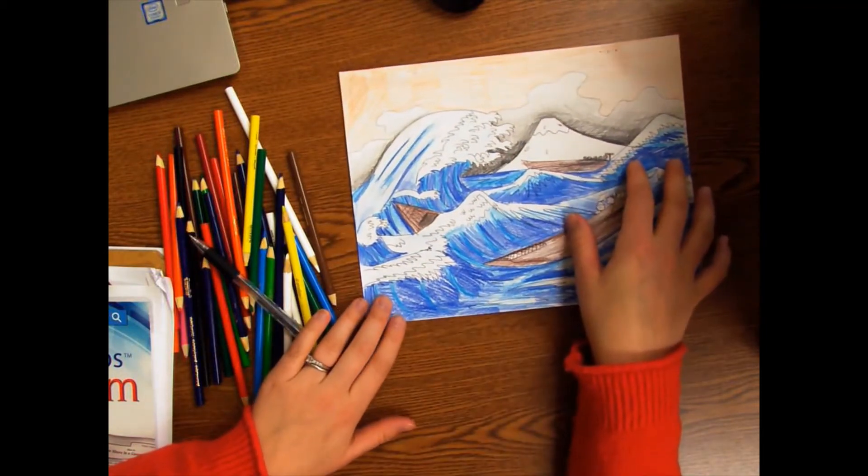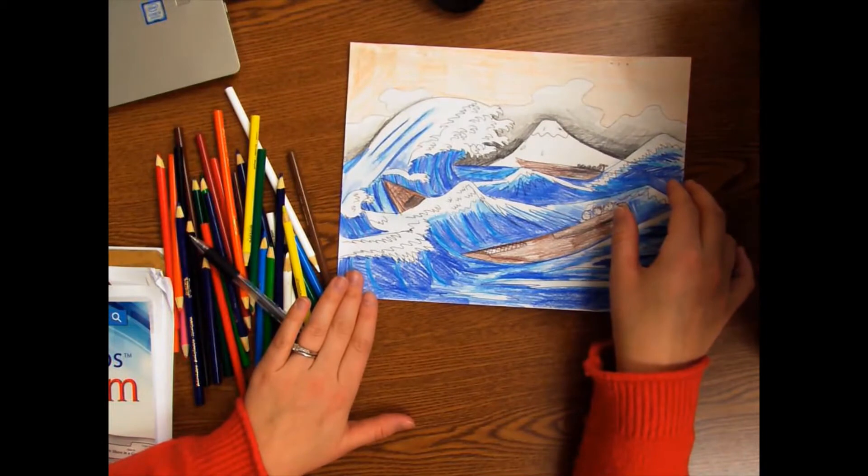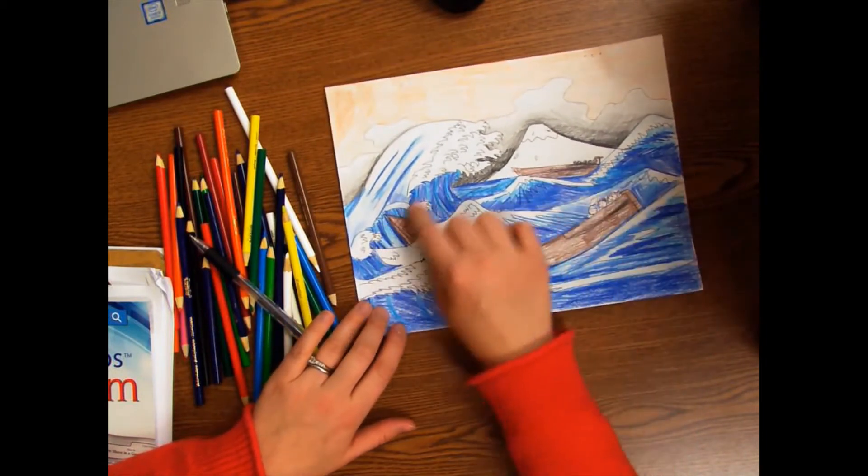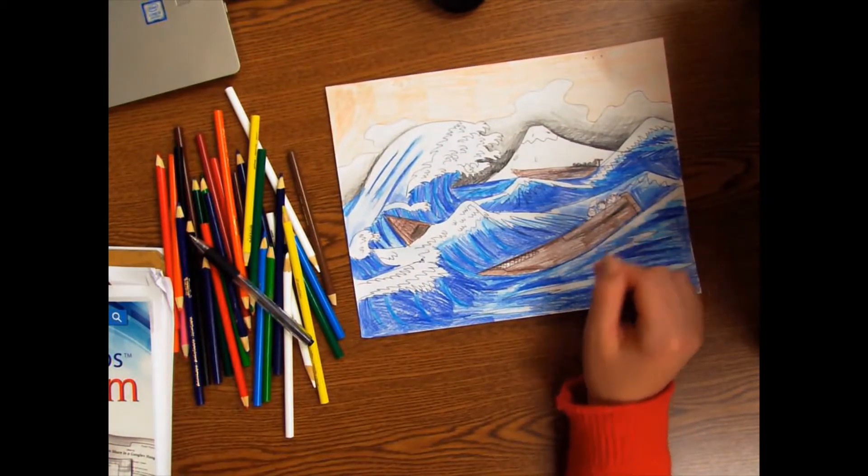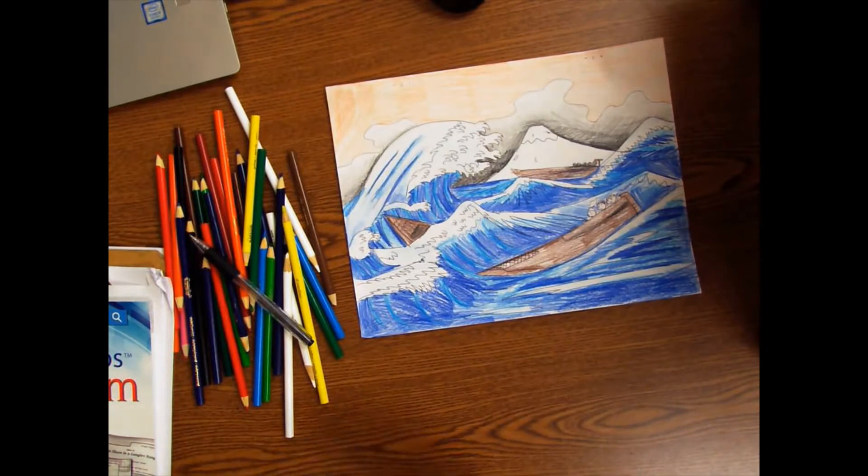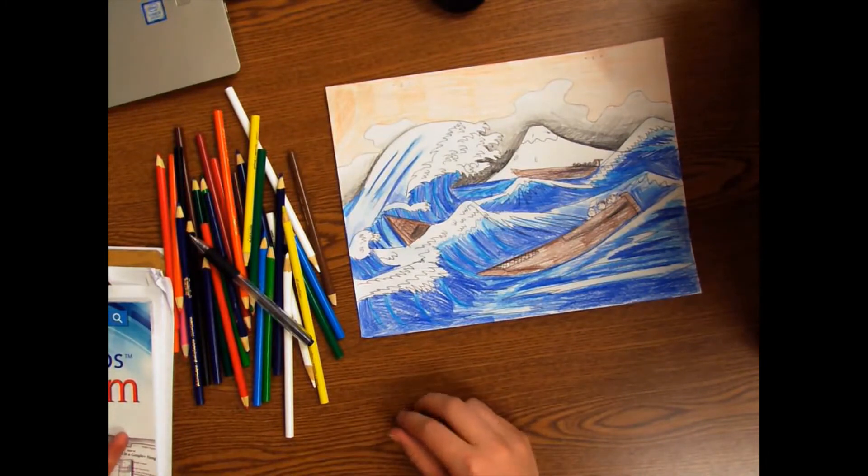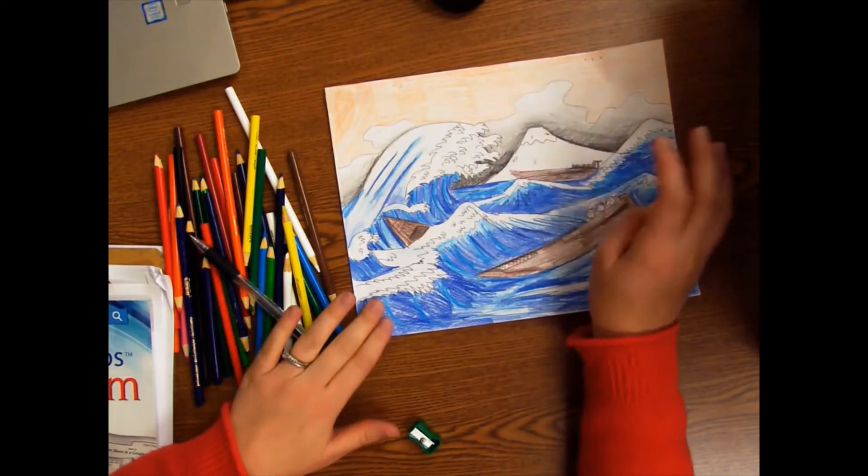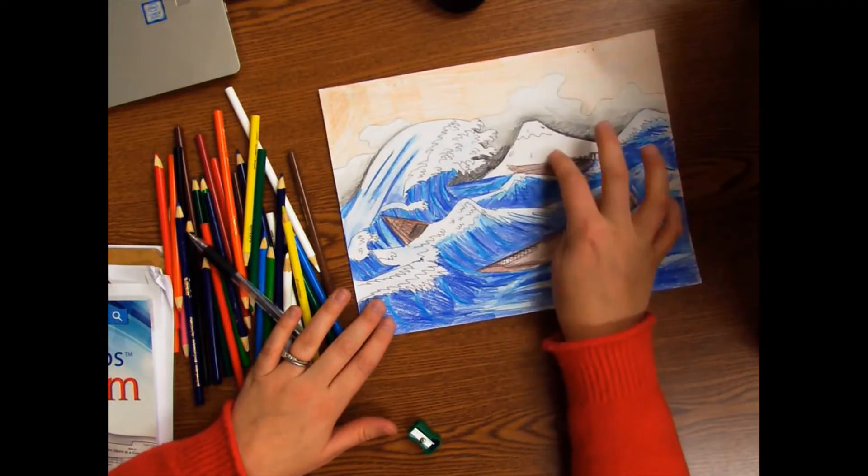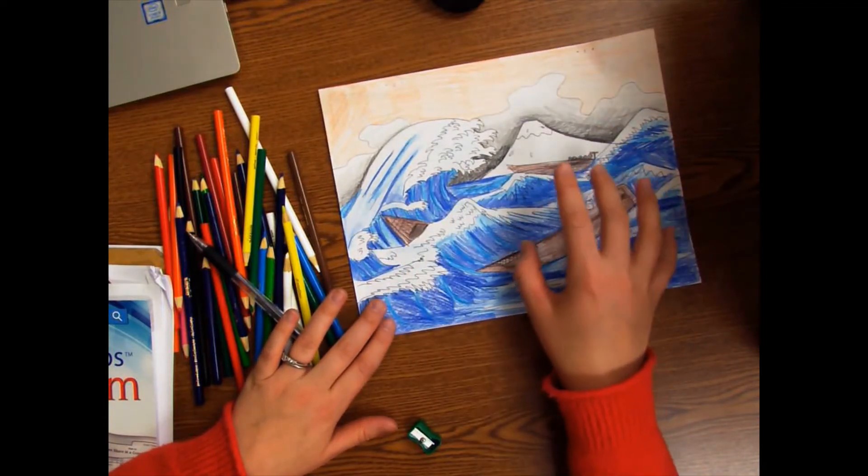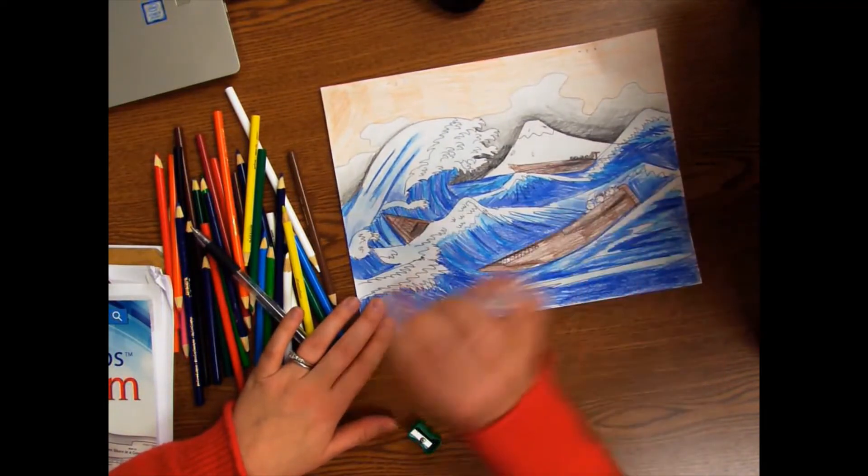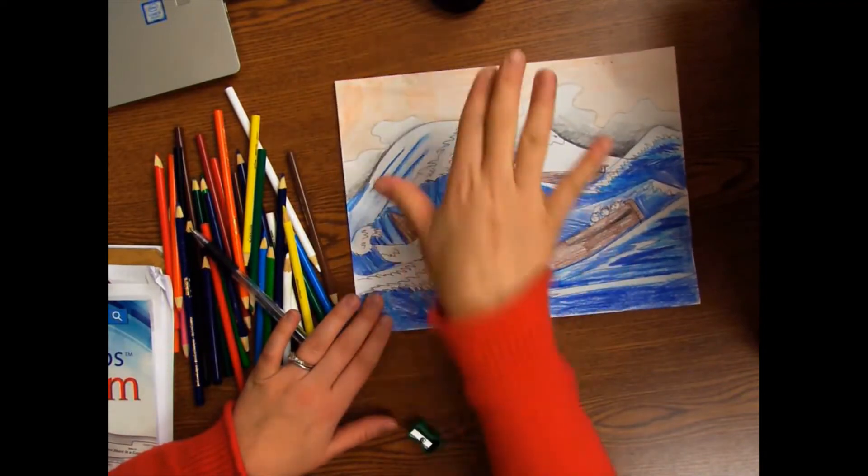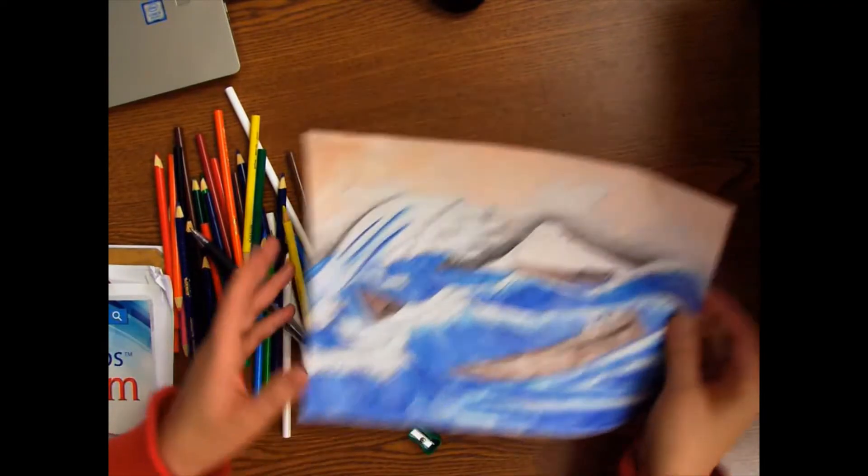Hi artists, today we're going to be creating Hokusai's wave. You're going to be creating your own landscape. You can feel free to change and adapt this the way you want to, but the rule is it needs to have the four parts of the landscape which is the background, middle ground, and foreground, and then the horizon line.